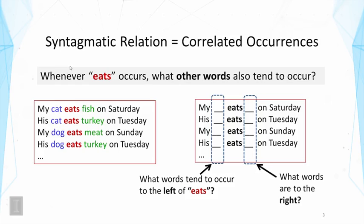Take a more specific example here. We can ask the question: whenever 'each' occurs, what other words also tend to occur? Looking at the sentences on the left, we see some words that might occur together with each, like cat, dog, or fish. But if I take them out, and if you look at the right side where we only show each and some other words, the question then is, can you predict what other words occur to the left or to the right?